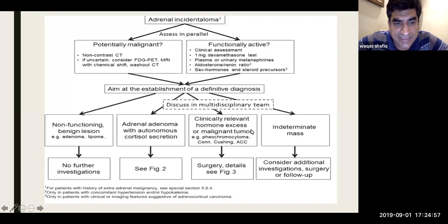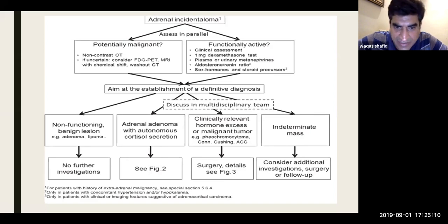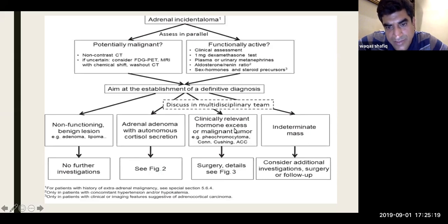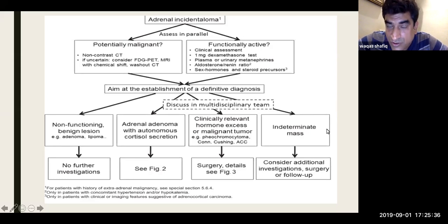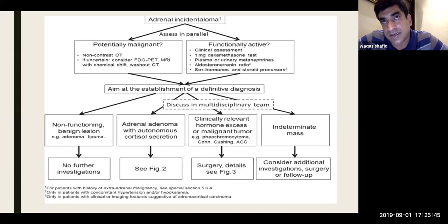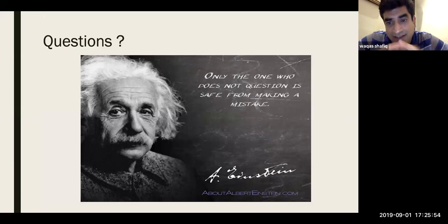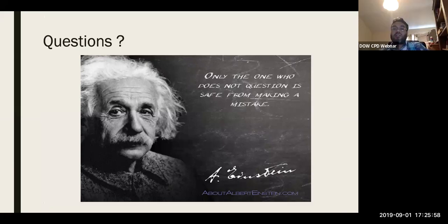The European Endocrine Society flow chart summarizes this: assess adrenal incidentaloma in parallel for malignancy and functional activity. Non-contrast CT first; if uncertain, do further imaging. If it's a non-functioning benign lesion, no action needed. If adrenal adenoma with autonomous cortisol secretion, discuss surgery with patient based on co-morbidities. Malignant tumors or functionally active lesions — pheochromocytoma or Cushing's — require surgery, with alpha and beta blockade preparation for pheochromocytoma. Indeterminate nodules: consider surgery or watch-and-wait after MDT discussion.